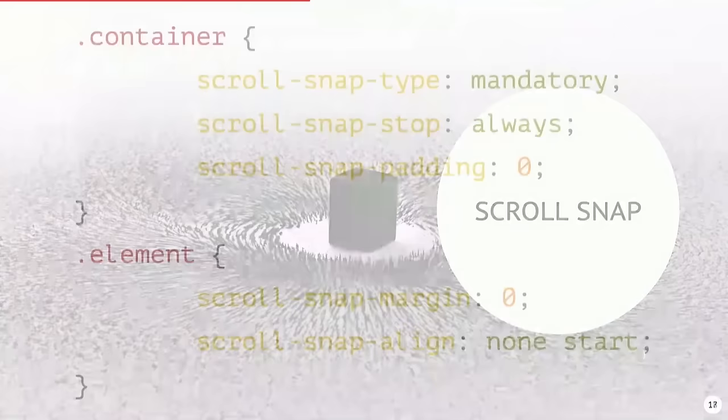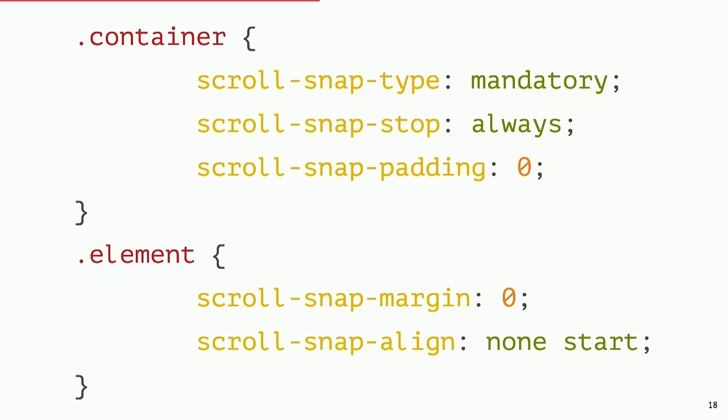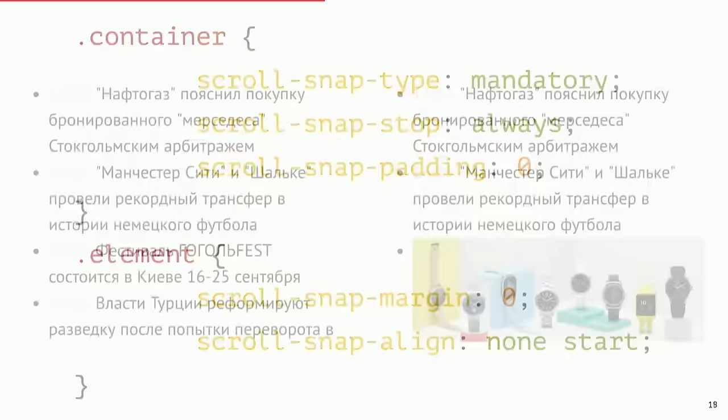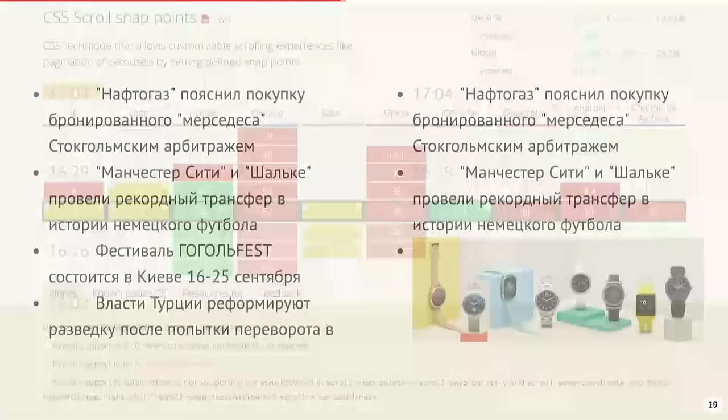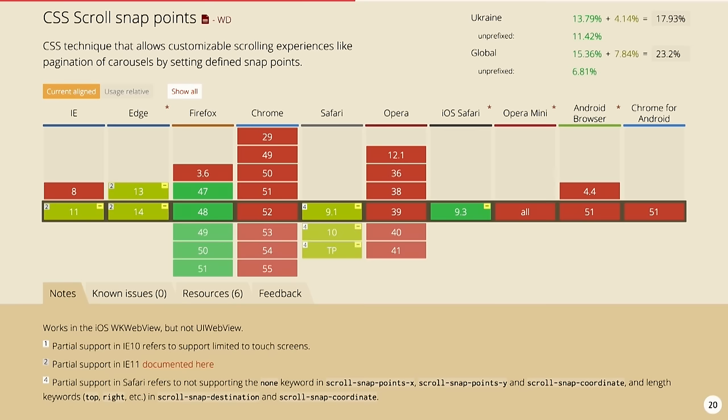Have you heard about scroll snapping? You may snap elements while scrolling — just set the snapping type for the container and which part of the element will be snapped. It works like this: you cannot scroll half a line, and here you even cannot scroll half a block. I think it looks much nicer that way. It's supported almost everywhere, and for other browsers you've got a polyfill.